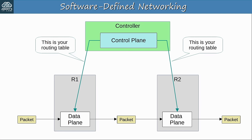Quiz question 2: Which of the following are SBIs? Select 2. The answers are C, OpenFlow, and D, OpFlex. Other examples of SBIs given in this video are Cisco OnePK and NetConf. We'll cover some of them in detail later, but for now just remember that they are SBIs — southbound interfaces.